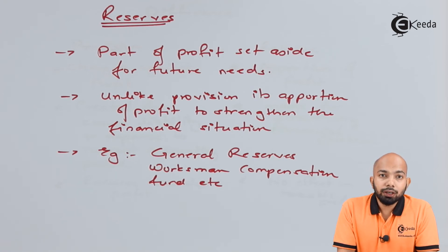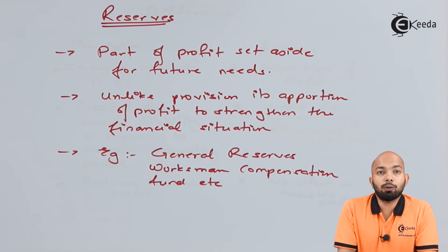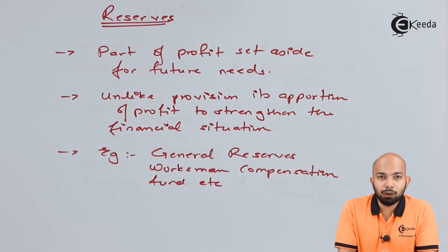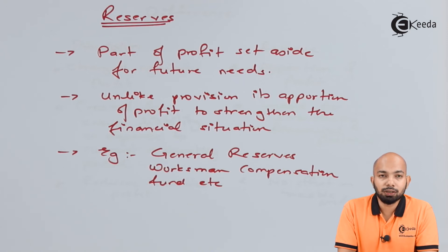Hence, reserve is completely different from provision. Under provision, you have deductions from the profit and loss account. However, in reserve, there is no reduction from the profit and loss account — it is a simple apportionment or segregation of the profit and loss account into different categories. That is what the first point talks about.